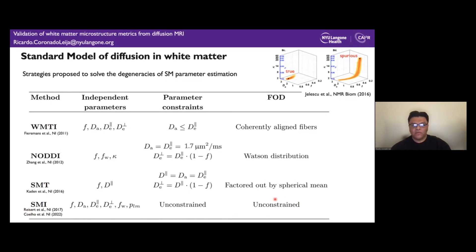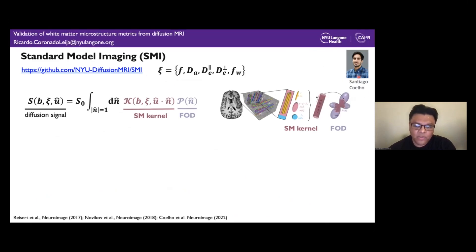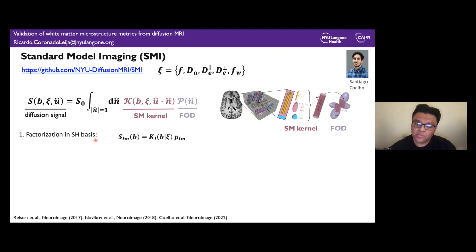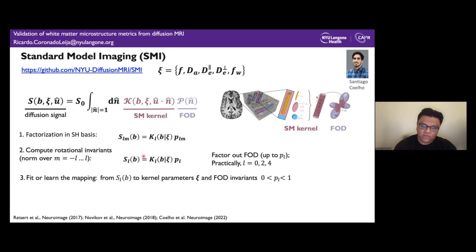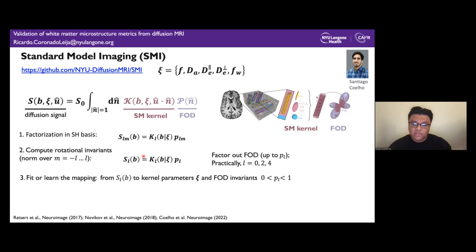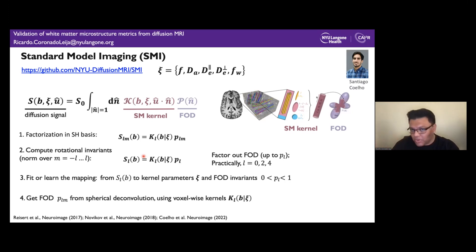The SMI toolbox was developed by the group of Santiago Coelho. It works as follows: first, the diffusion signal is transformed into the spherical harmonic basis, making the convolution a simple product. Then, orientation information is removed by computing rotational invariants. A mapping from the rotational invariants of the signal to the kernel parameters is learned via polynomial regression — a machine learning approach trained on training data. Finally, the FOD is obtained by spherical deconvolution using the voxel-wise kernel parameters already estimated.